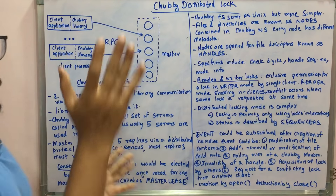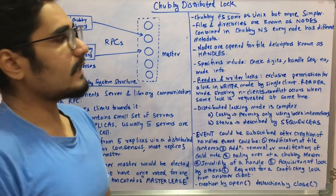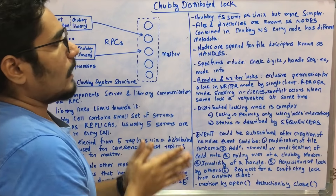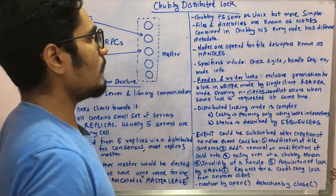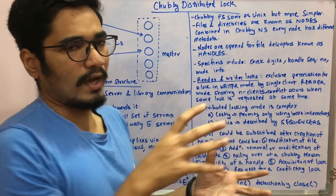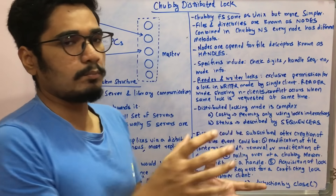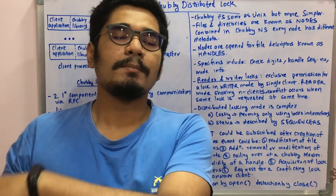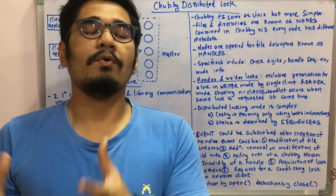The Chubby file system is similar to but simpler than the Unix file system. Files and directories in Chubby are known as nodes, contained in the Chubby namespace, and every node has distinct metadata. When you drill down the nodes, you can see file descriptors — these are called handles in Chubby. Handles include specifiers such as check digits (used for preventing guessing of handles), a handle sequence number, and mode information. Mode information records the configuration with which the previous master created that particular setup, since after some duration a new master takes over.